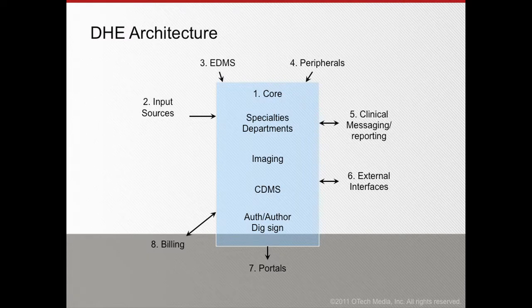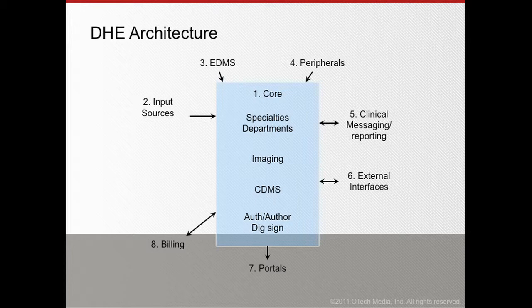Now let's talk about the architecture of a typical digital healthcare enterprise. It has multiple components. First is the core — the heart of the system — where the specialties and departments reside, along with imaging archival, storage, imaging viewing, and the data management system. The core also includes authentication, authorization, digital signatures, and the audit trail facility. This is the number one component without which nothing else would function.